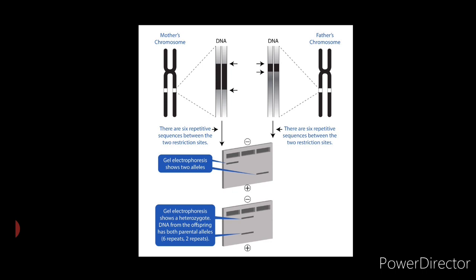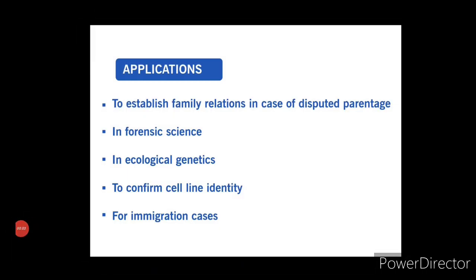Now let us understand application of DNA fingerprinting technique. Application of DNA fingerprinting: to establish family relations in case of disputed parentage. DNA fingerprints of the child can be compared with parents to establish a positive relationship. In forensic work to identify a suspect of murder or rape case. It is helpful for population and ecological genetics. To confirm cell line identity in cell line collection. It is helpful in immigration cases also.